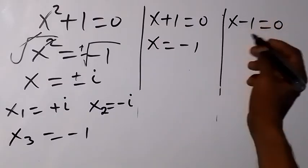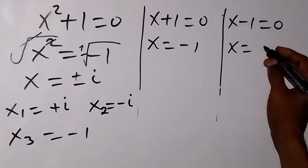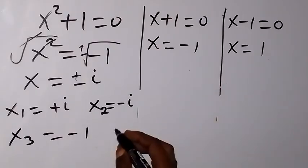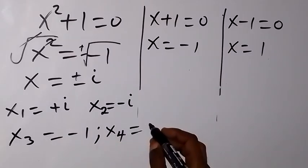And for this case as well, we can take minus 1 to this side. We have x equals to, it becomes plus 1. So we can say that the fourth value of x, x4, is equal to 1.